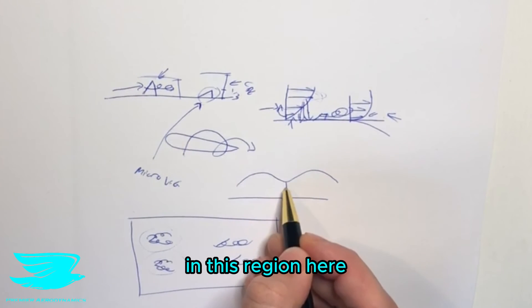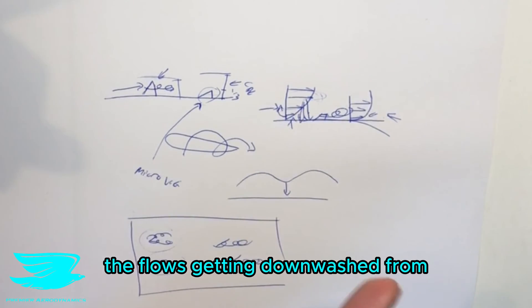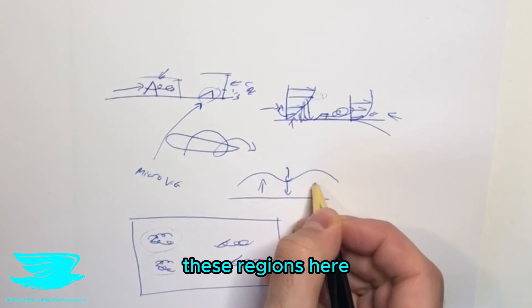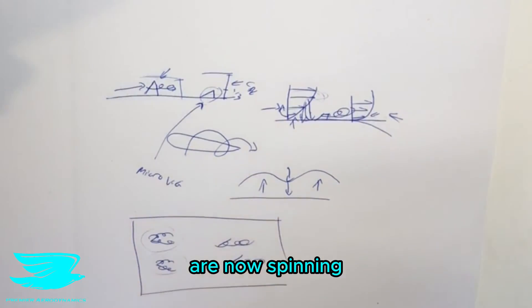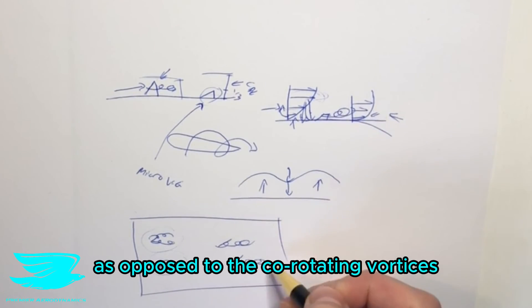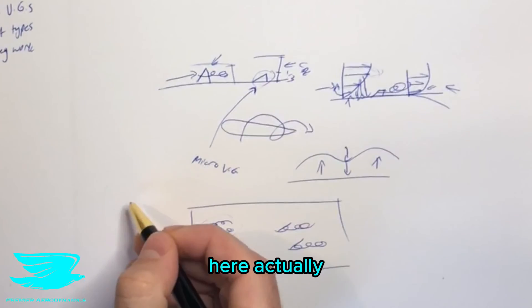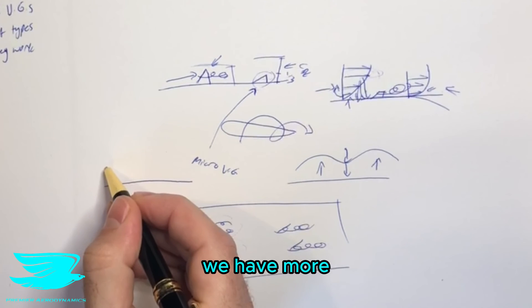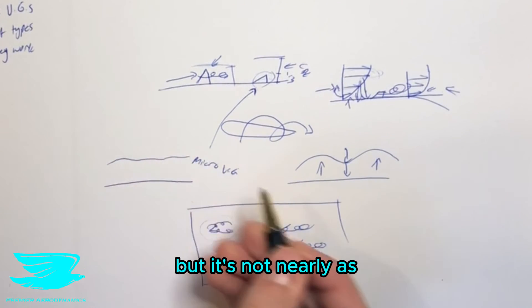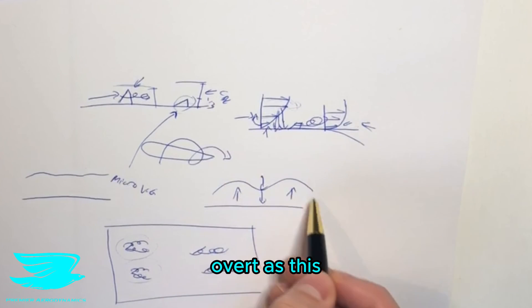And that's because in this region here, the flow is getting downwashed from vortices on each side, it's pushing the flow down. And in these regions here, the vortices are now spinning the other way, and in the region here, it's pushing the flow up. So we get this upwash here. As opposed to the co-rotating vortices, let's move over here actually, we have more, it's still modulated, but it's not nearly as overt as this.